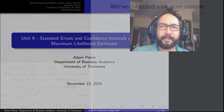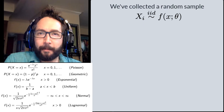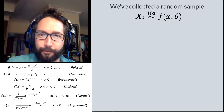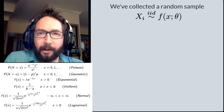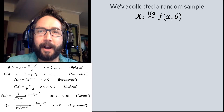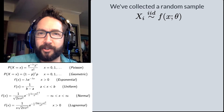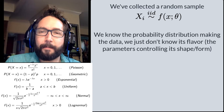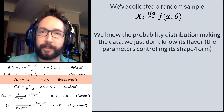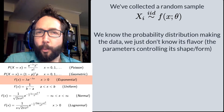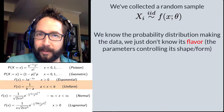So here's where we're at. We've collected an IID sample from some probability distribution, meaning our data values are all independent from one another. They're all coming from some common distribution, and we think we know what that probability distribution is — maybe a normal distribution, a Poisson distribution, or an exponential distribution. We just don't know what flavor of that distribution we're dealing with.